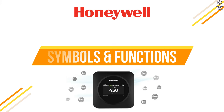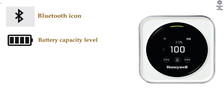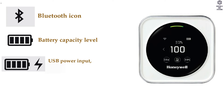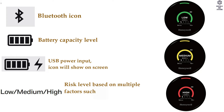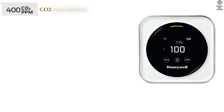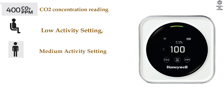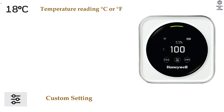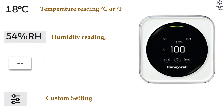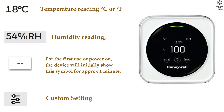Symbols and functions: Bluetooth icon, battery capacity level, USB power input icon will show on screen. Risk level is shown based on multiple factors such as CO2, temperature, RH, and activity level. CO2 concentration reading, low/medium/high activity settings, custom setting, temperature reading in degrees Celsius or Fahrenheit, and humidity reading. For the first use or power-on, the device will initially show a warm-up symbol for approximately 1 minute.